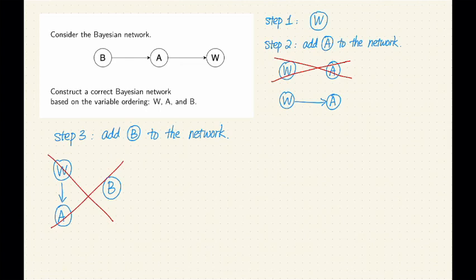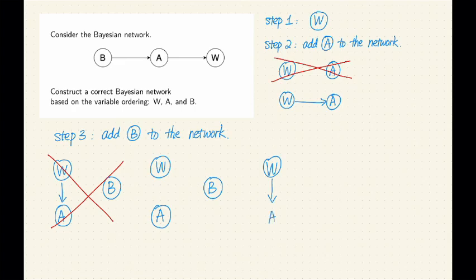Okay, so having a parent set of size zero does not work. Let's now think about having a parent set of size one. So given that we have two nodes, we have two possibilities.